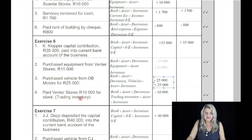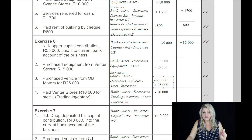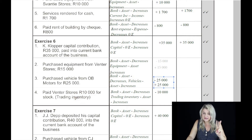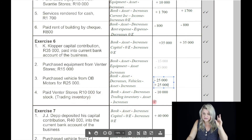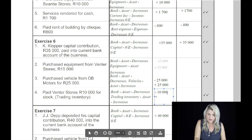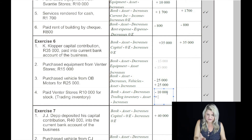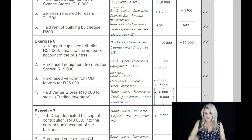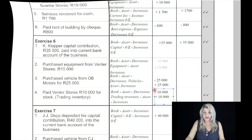Paid Fenter Stores 10,000 Rand for stock, which is called trading inventory. The two accounts affected are bank and trading inventory — both of them are assets. One asset will decrease because we're paying for it from the bank, and the other one will increase to the same value because we have got stock to that value.